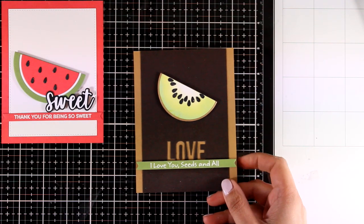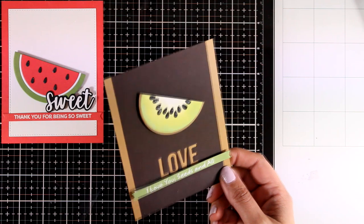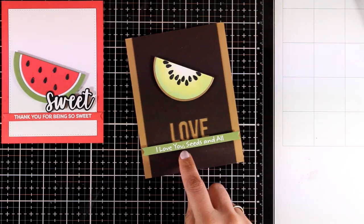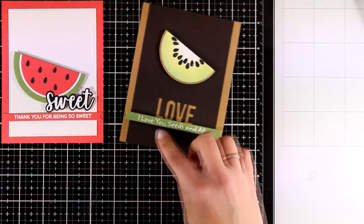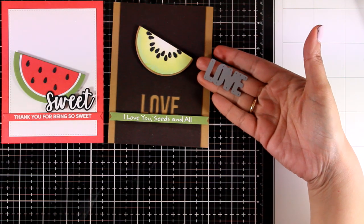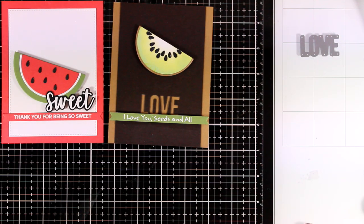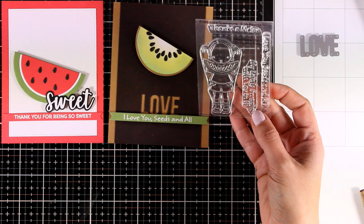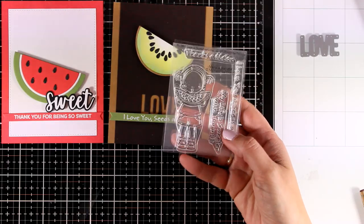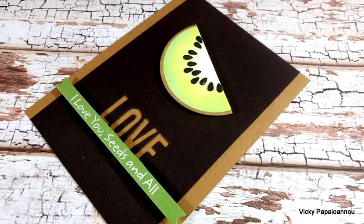Here is my kiwi card in brown colors. I think it would work great as a masculine card as well. The sentiment is a combination of die cutting and stamping. The die I cut out of the brown cardstock is 'love' from an older MFT release, and I combined it with a sentiment that says 'I love you seeds and all' from the new Sweet Summertime stamp set.